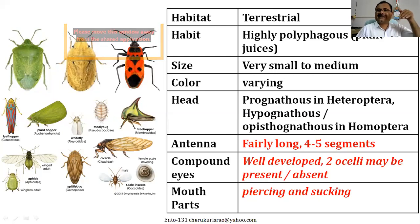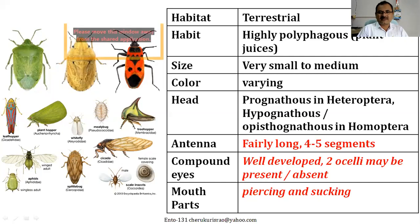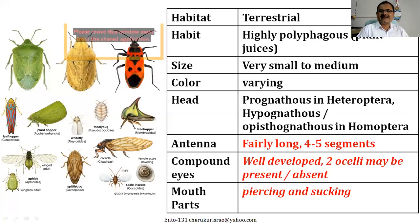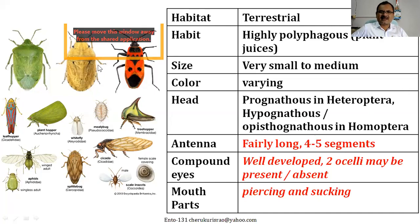In Heteroptera the head arrangement is prognathous, while in Homoptera the head is hypognathous — looking downward. The antenna is very long in most insects, especially longer in Heteroptera compared to Homoptera, usually four to five segments. Compound eyes are well developed and they have two ocelli. The mouthparts are extremely important: mandibles and maxillae convert into stylets — the mandibular stylets are for piercing and the maxillary stylets are for sucking the sap. This arrangement is exclusive to insects under Hemiptera.